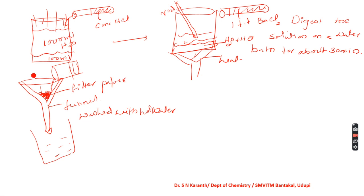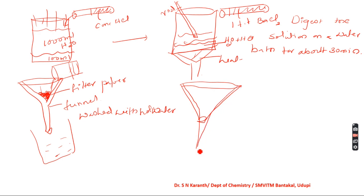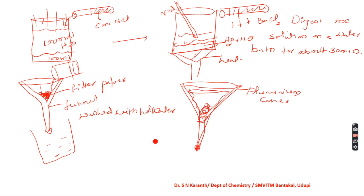Place the funnel in an aluminum cone and heat it continuously until the filter paper and precipitate become completely dry. The filter paper along with the precipitate becomes dry.